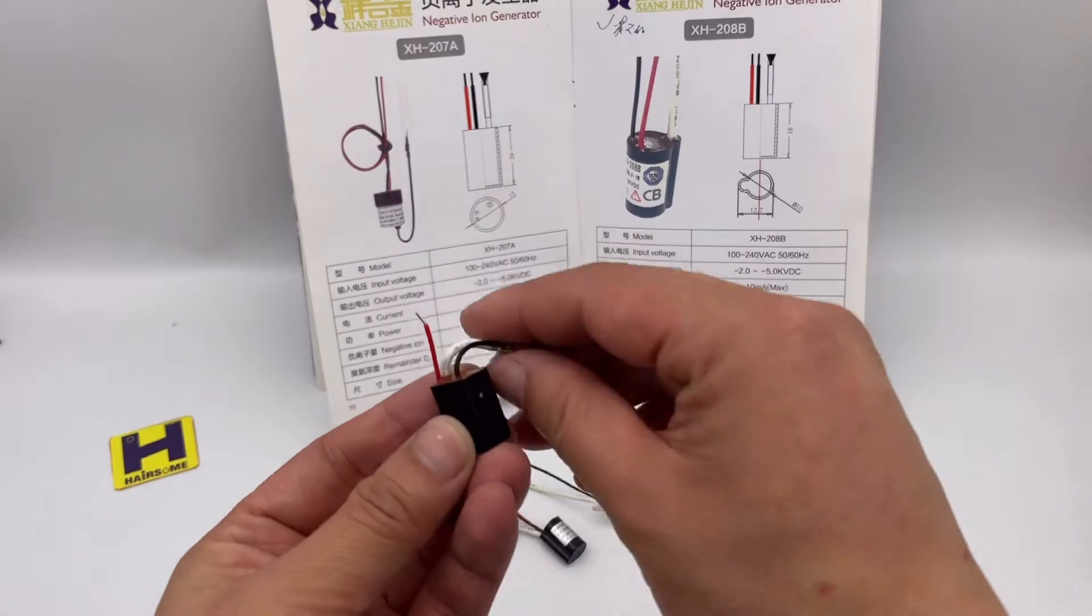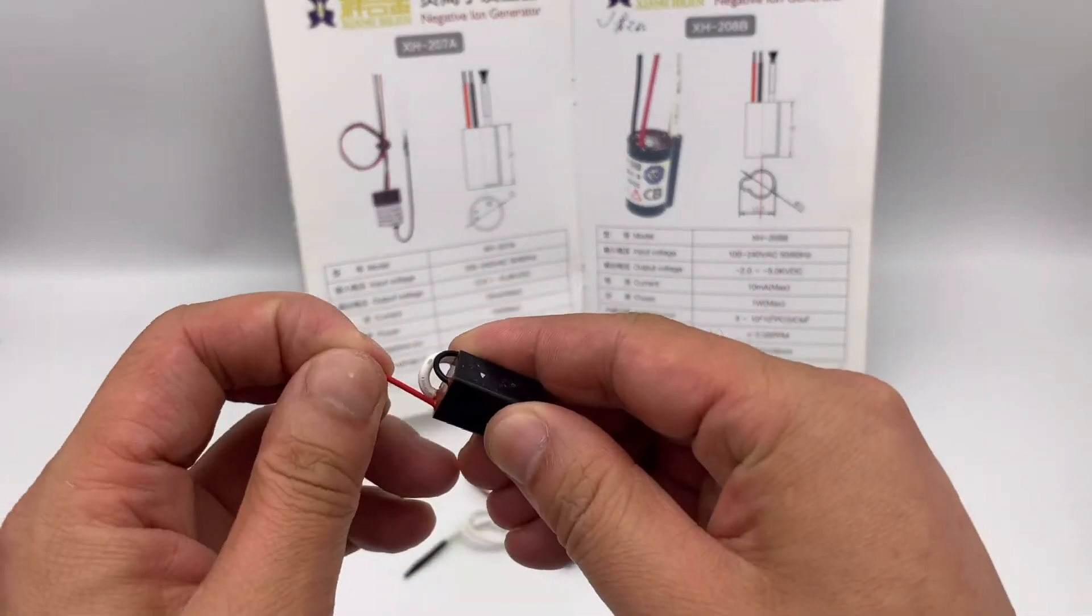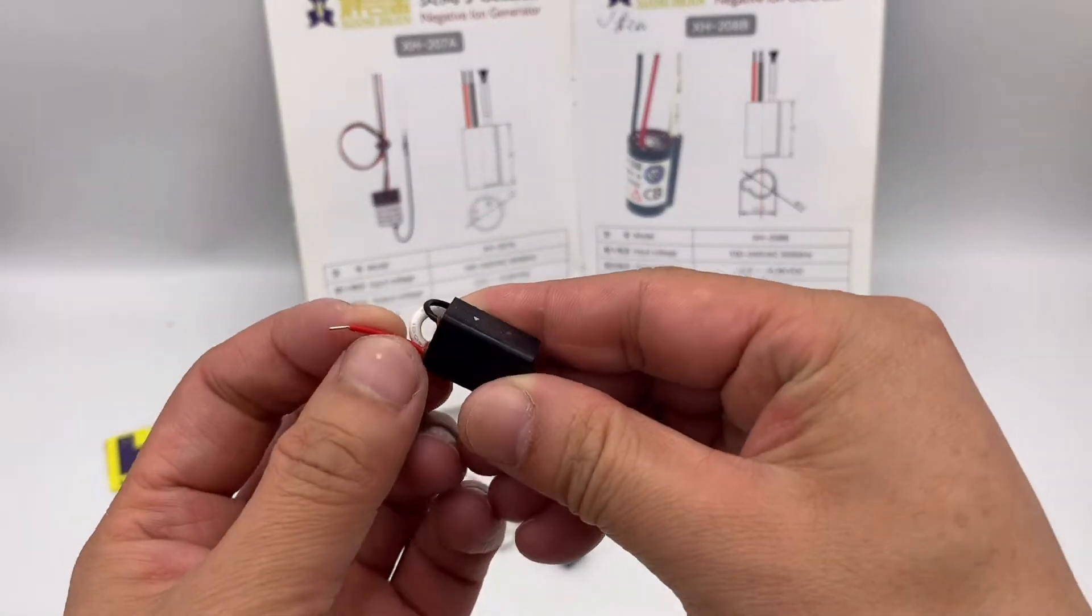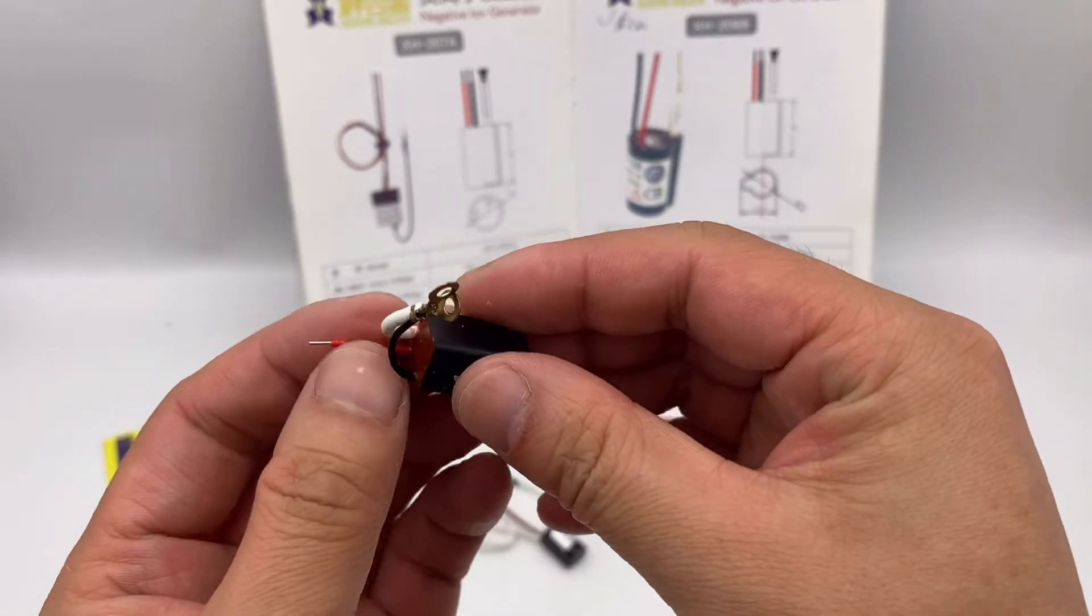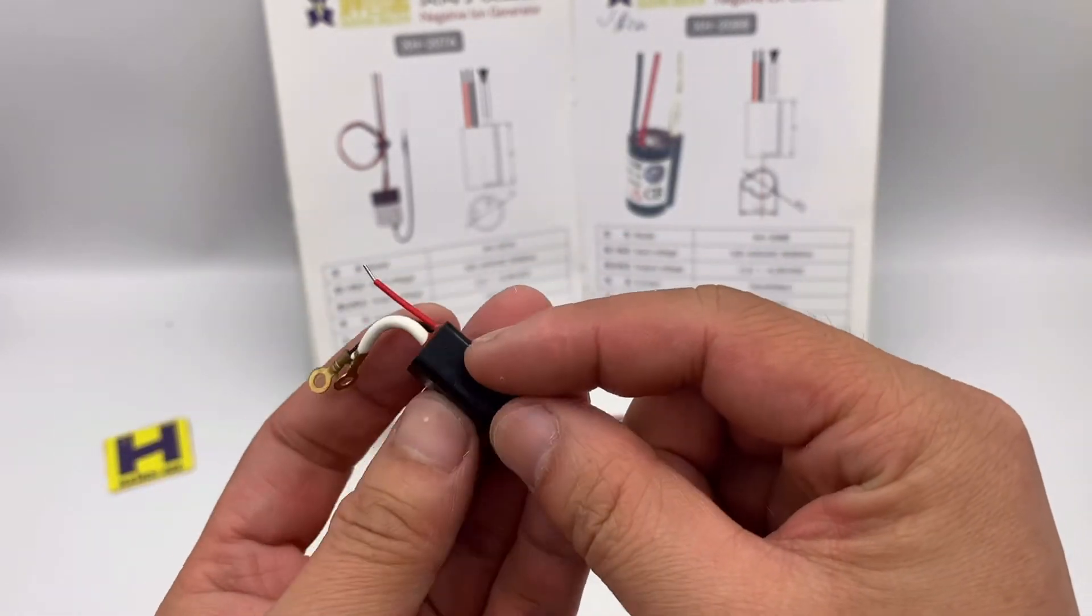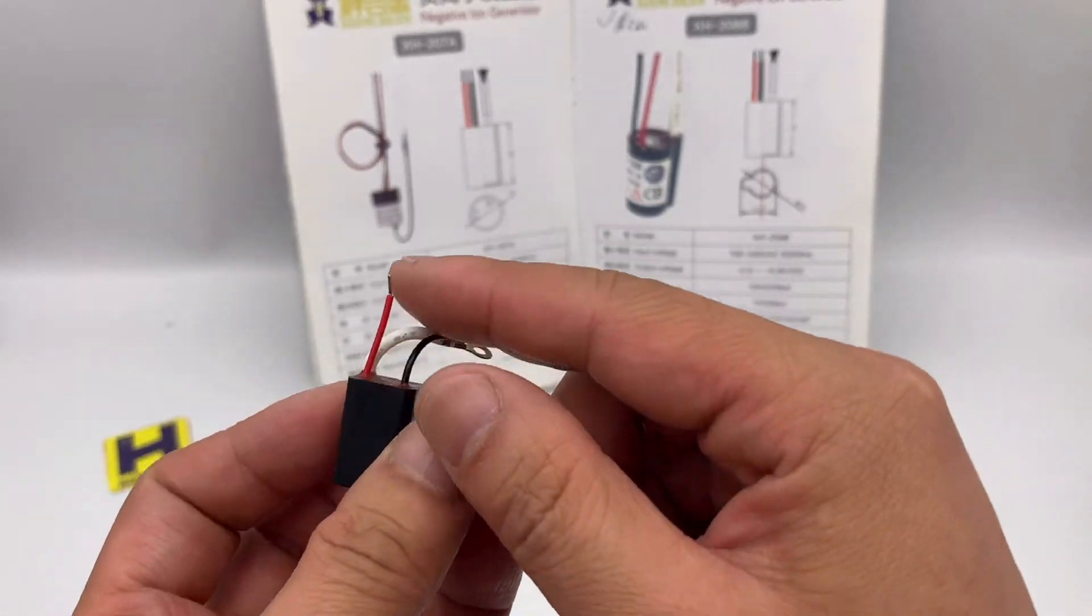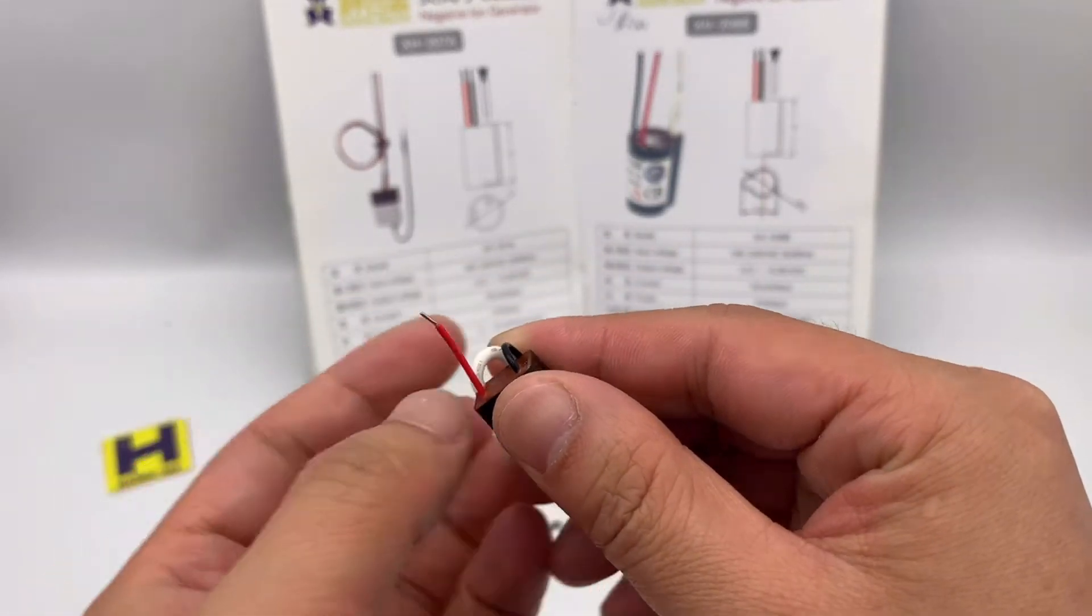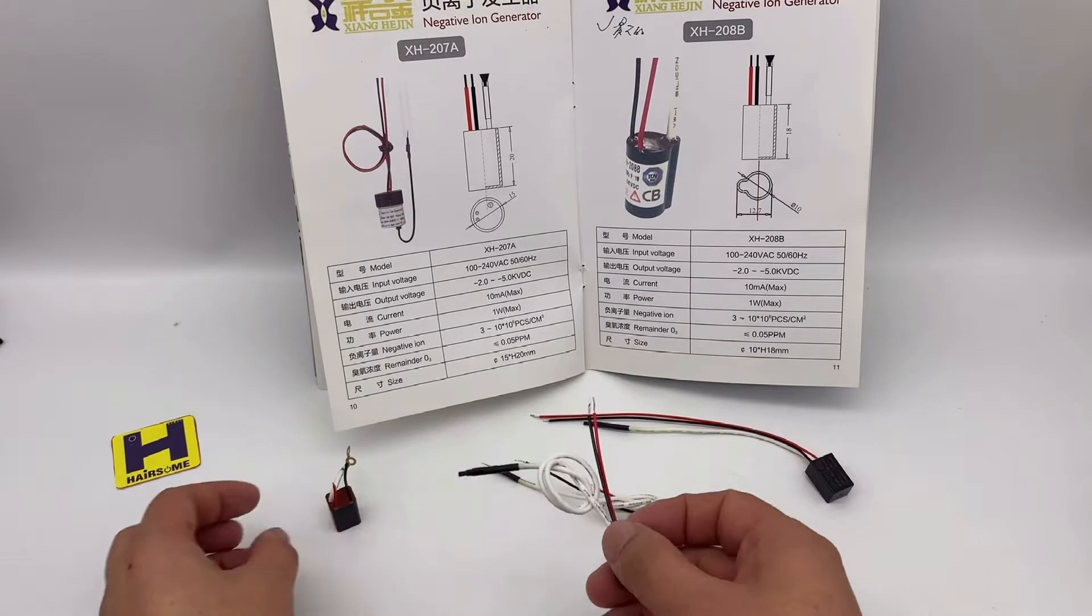This is the generator that can emit ions. Through this generator to make and to emit, to put in the ionizer.